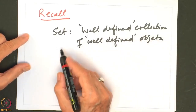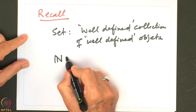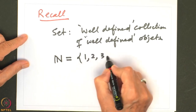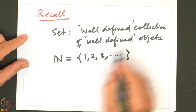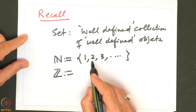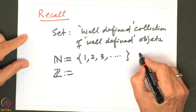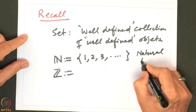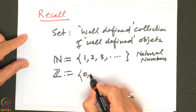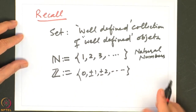We looked at two important examples from the point of view of our subject. One was the set of natural numbers, denoted by N, that is {1, 2, 3, ...}. Then we looked at the set of integers, which is {0, ±1, ±2, ...} and so on. That is the set of integers.